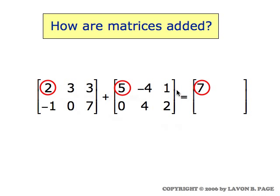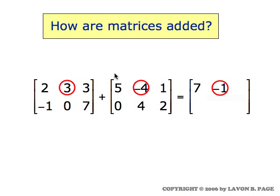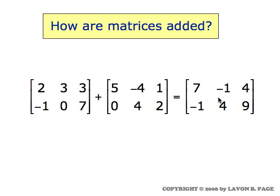To determine the number that goes into the row one column one position, we simply add the number from the row one column one position of the left matrix to the number from the row one column one position of the right matrix. Two plus five is seven. Similarly, when we move over to the row one column two spot, we get three plus minus four, which is minus one. If you follow through with the rest of the computation, this is what you wind up with.